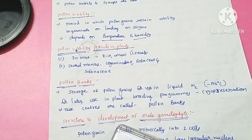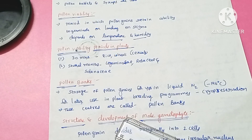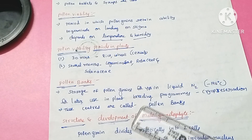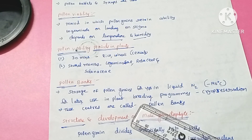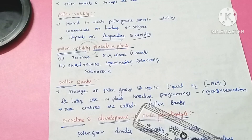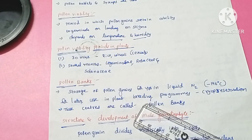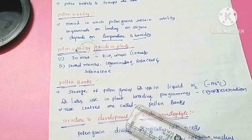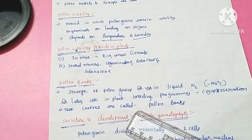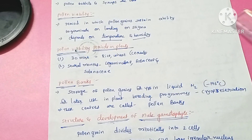Centers where pollen grains are preserved are called pollen banks. Pollen grains stored in pollen banks are used for plant breeding programs.